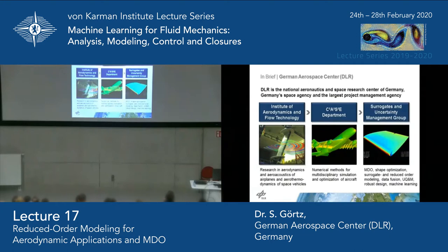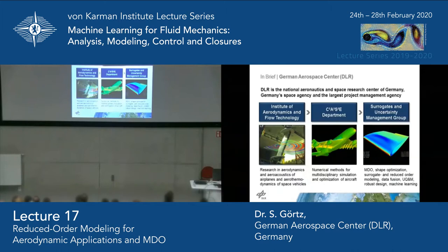One of my groups is dealing with surrogate modeling, reduced order modeling, uncertainty quantification, robust design, and MDO. We're also increasingly using machine learning methods. When this course was first set up, I think it was more focusing on the reduced order modeling aspects, which my talk is about. But I'm also trying to touch upon the machine learning part, and I think the course has evolved in that direction a little bit.